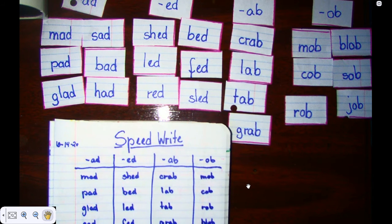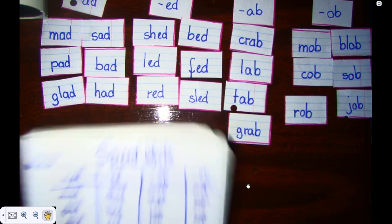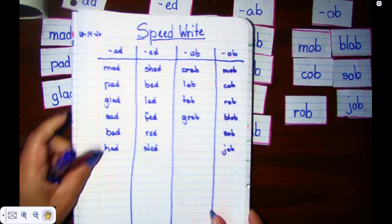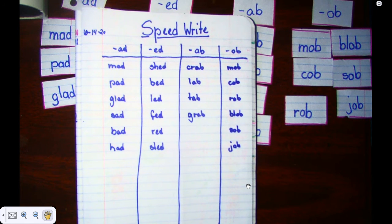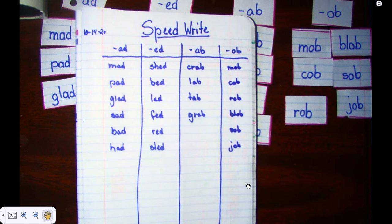All right. I'm done. Here are my words. Did you beat me? Did you write as neat as me? On the bottom of your page, write down who won, you or me. When you're done, please post your picture of your sort on Class Dojo. See you next time, my little friend.